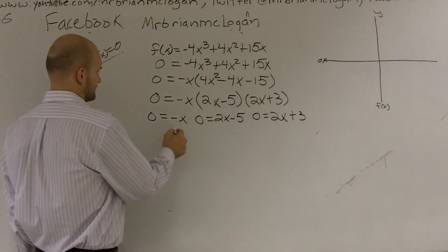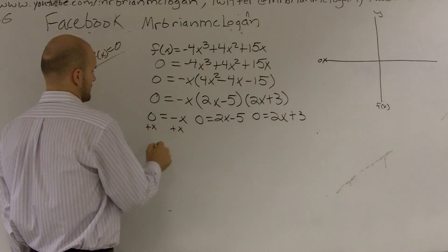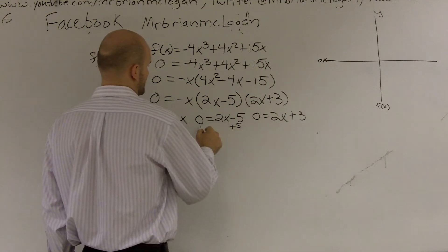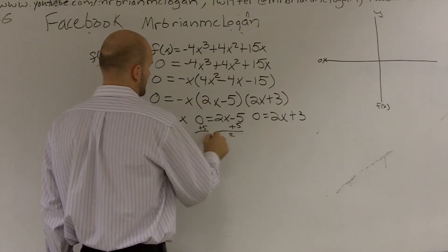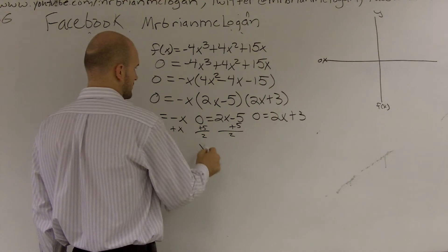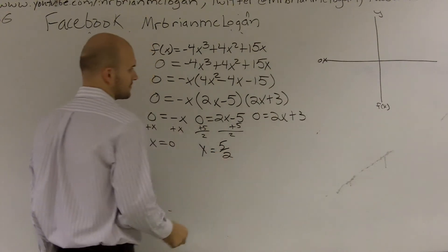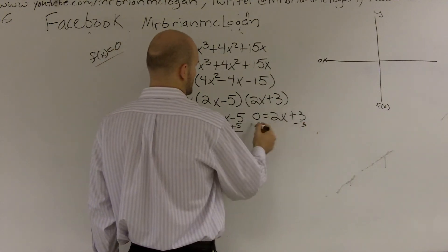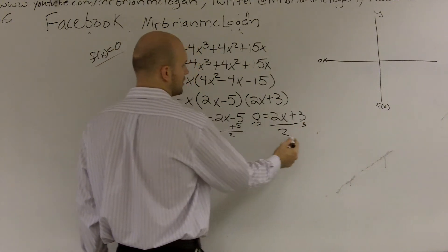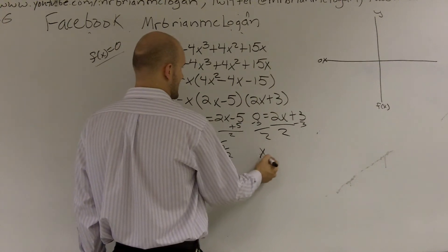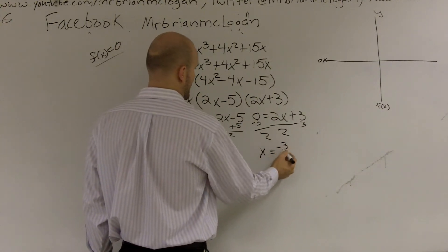So when I solve, add an x, x equals zero, add 5, divide by 2, x equals 5 halves. And here I'm going to subtract by 3, then I'll divide by 2, and what I end up getting is x equals negative 3 halves.